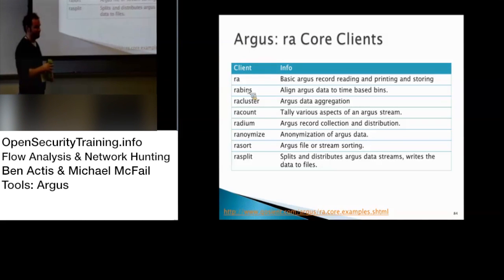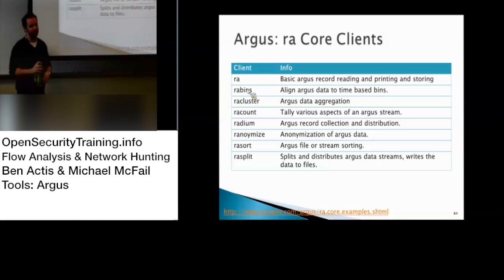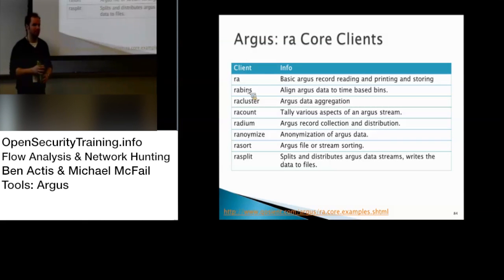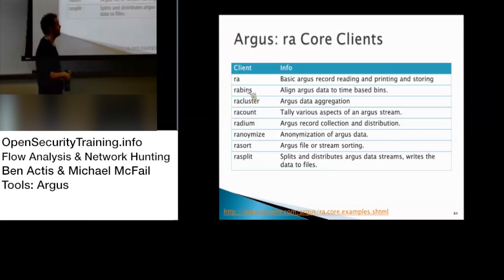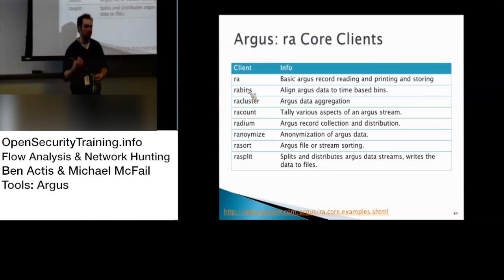When you say randomize the IPs, it means it consistently maps who's talking to whom. It'll be a mapping file so you can go back and forth if you need to. They also have a sort for Argos file stream sorting, and a split — so you can split and distribute Argos data streams and write to state files.